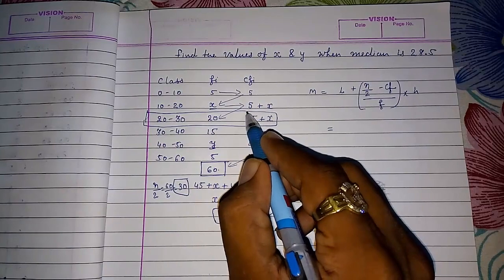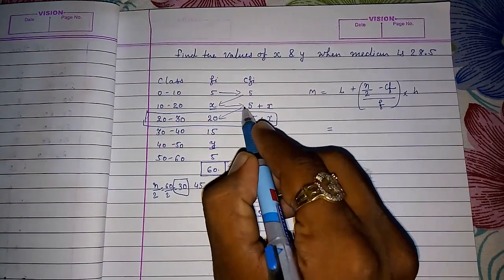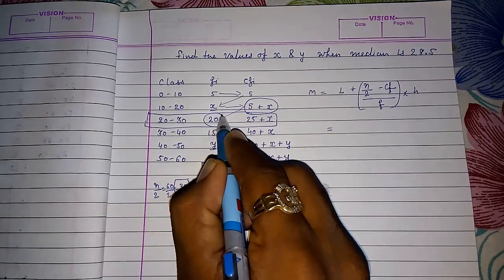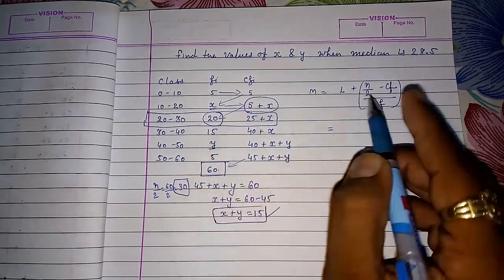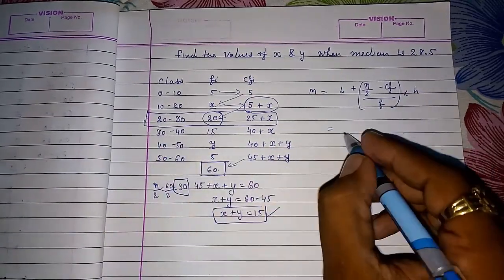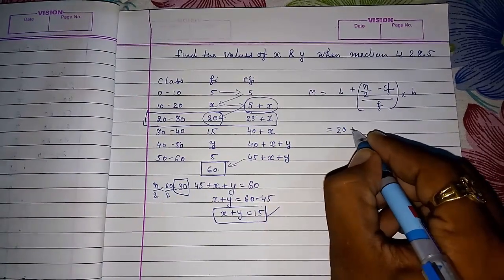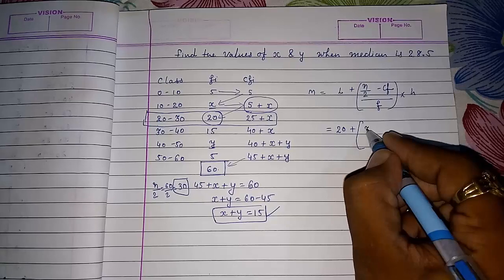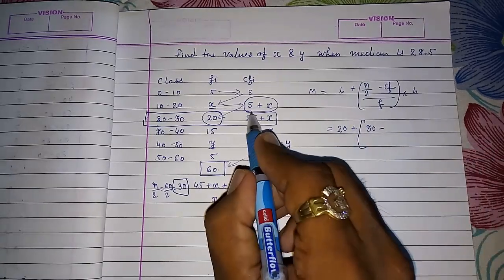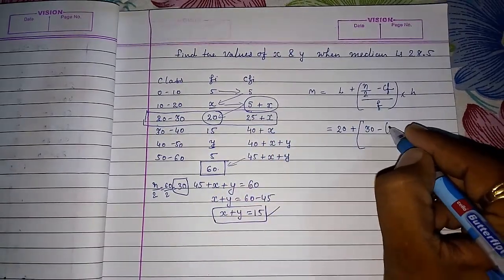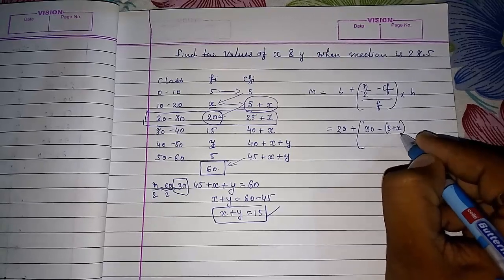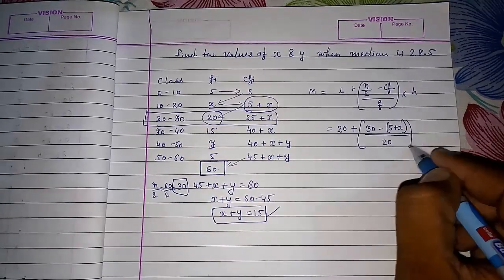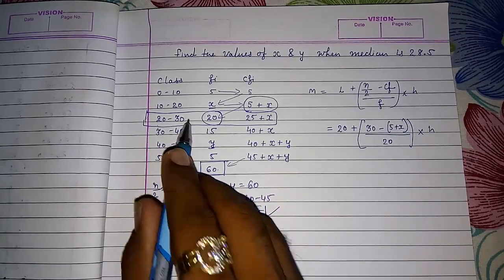From this median, before median class we are getting cumulative frequency, and the frequency of the median class that will be our F. Means L will be 20 plus N by 2 that we had found out, 30, minus cumulative frequency that is 5 plus X. And then frequency is 20. And at last the class interval that is of 10. So I will put it here.